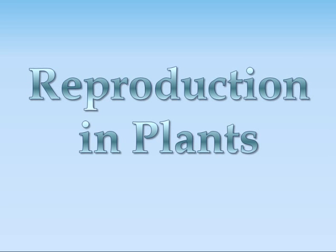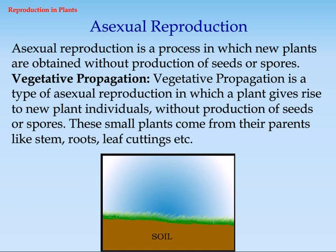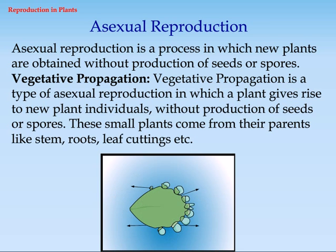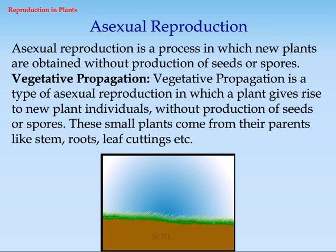Topic: Reproduction in Plants. Asexual Reproduction. Asexual reproduction is a process in which new plants are obtained without production of seeds or spores.